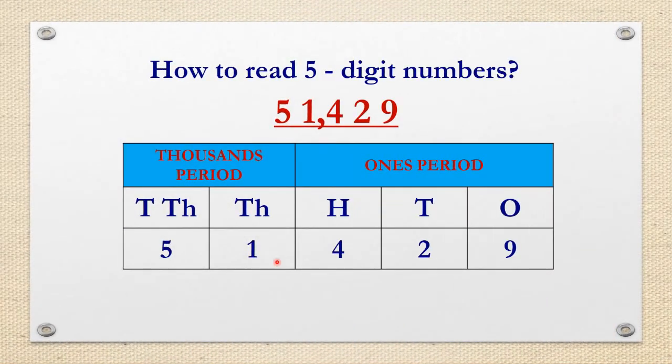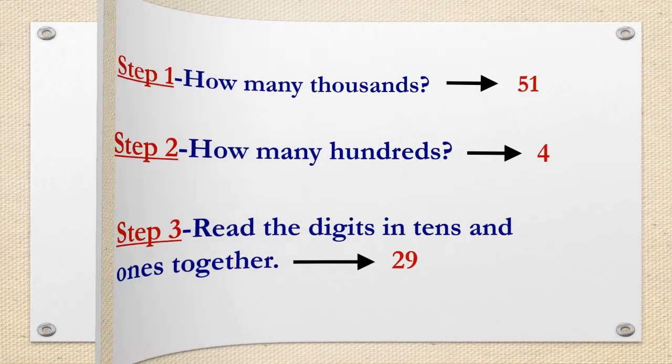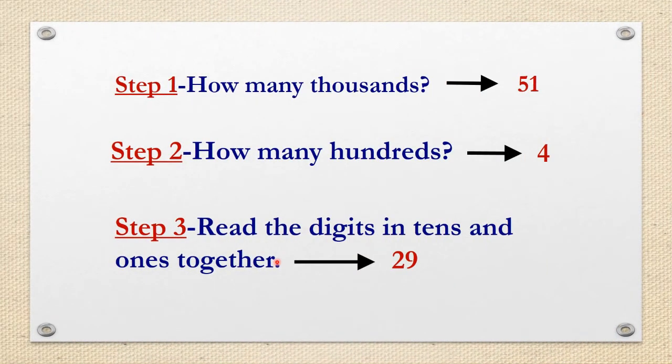Students, how to read five digit numbers using the place values chart. Let us read this number. There are three steps in reading numbers. Step 1: How many thousands?